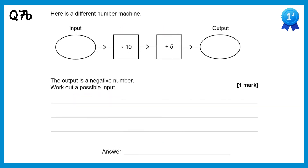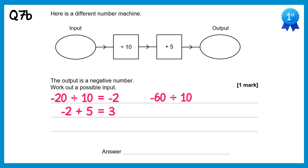For this question we need to find a possible input that gives a negative output. Trying negative 20: negative 20 ÷ 10 = negative 2, then negative 2 + 5 = 3 — that's not negative. Trying negative 60: negative 60 ÷ 10 = negative 6, then negative 6 + 5 = negative 1 — that is negative. So a possible input is negative 60. Any number less than negative 50 would also work.